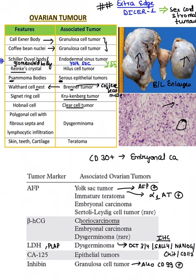Clear cell tumor shows the presence of hobnail cells, and it has a classical history of diethylstilbestrol exposure. Coming on to dysgerminoma — the male counterpart is seminoma. There are tumor cells with white spaces around them, and fibrous septa with lymphocyte infiltration.